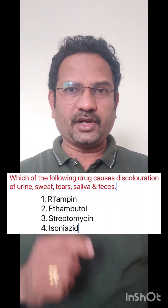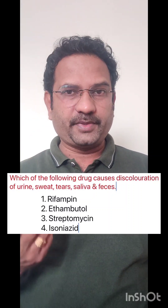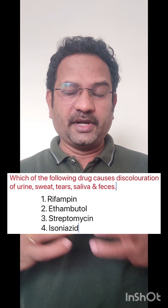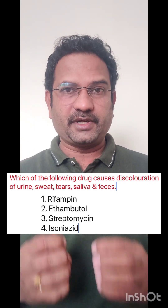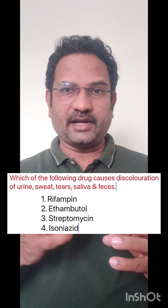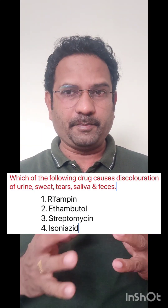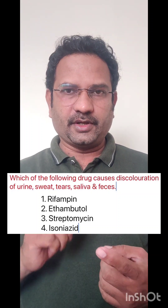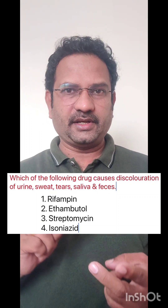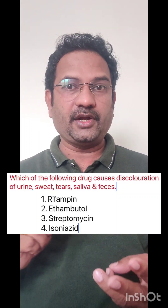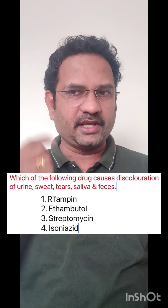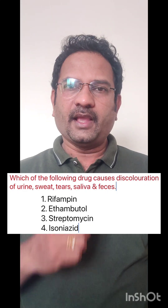Now, ethambutol causes optic neuritis — the ability to distinguish between green and red color will be impaired. Streptomycin causes neurotoxicity, nephrotoxicity and ototoxicity. Ototoxicity means hearing impairment.